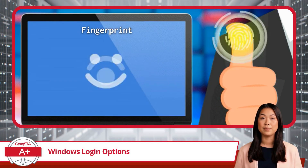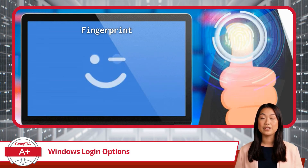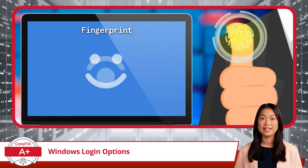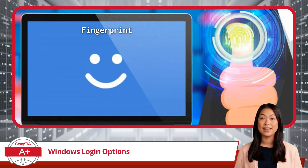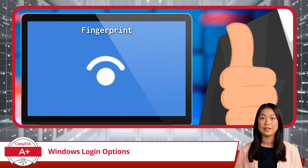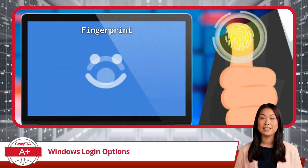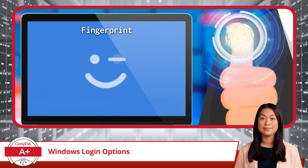Next, we have Fingerprint Authentication, another Windows Hello feature. This method lets you unlock your device by placing a finger on a fingerprint reader. To set it up, go to Sign-in Options, select Windows Hello Fingerprint, and follow the prompts by placing your finger on the reader repeatedly until the setup is complete. This is a fast and secure way to log in, ensuring that only you can access your system.